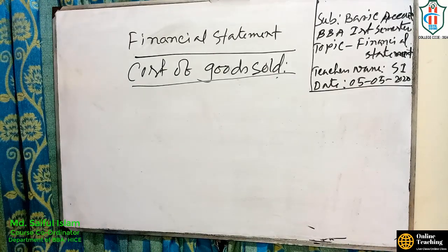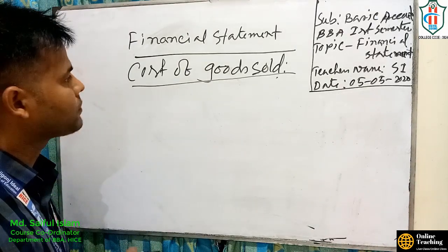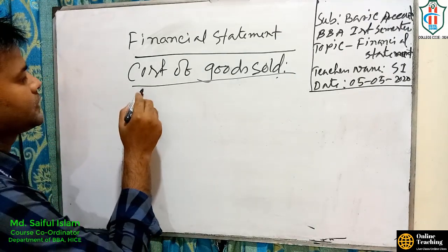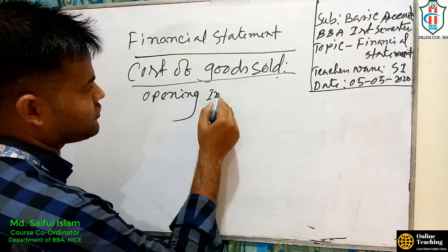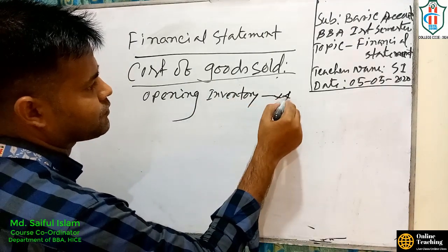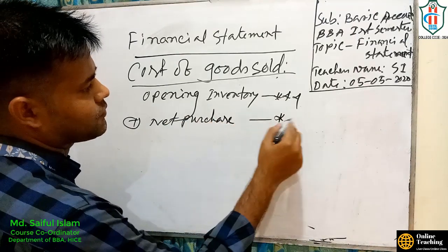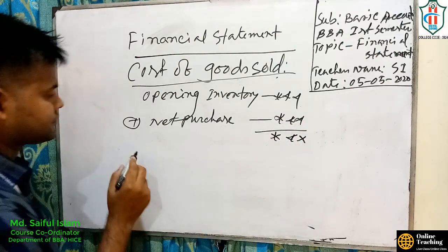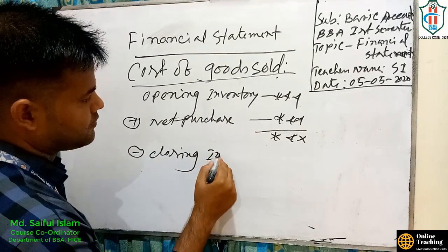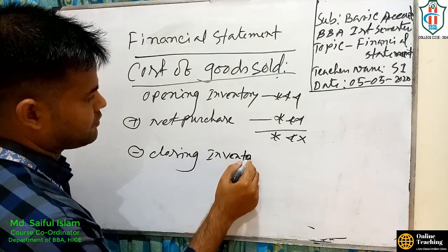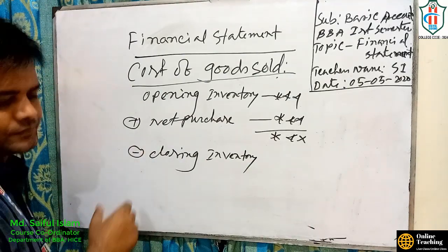Cost of goods sold — that means the decrease upon the bag. We will calculate cost of goods sold by the following formula: opening merchandise inventory plus net purchases. Some items may be added here, for example carriage inward and freight charges.